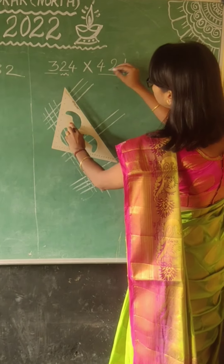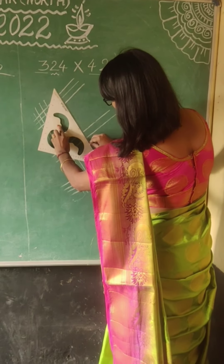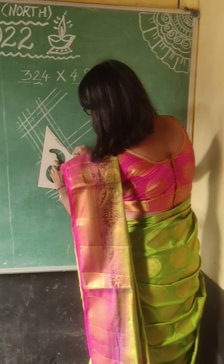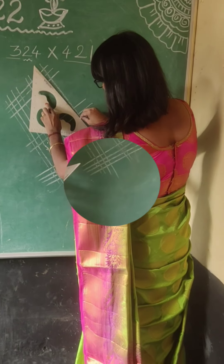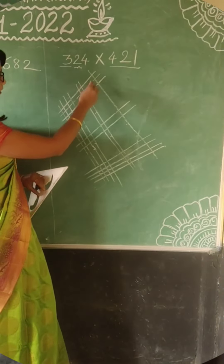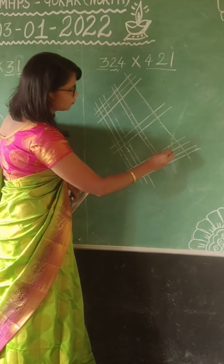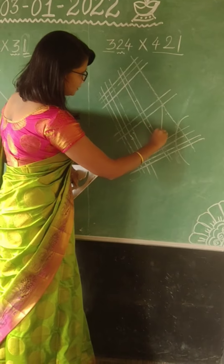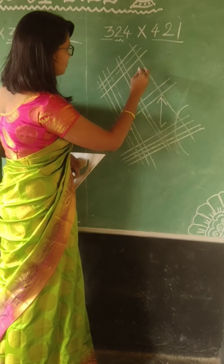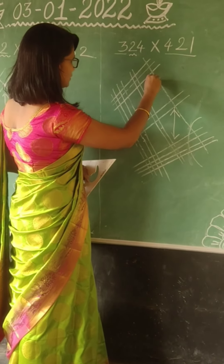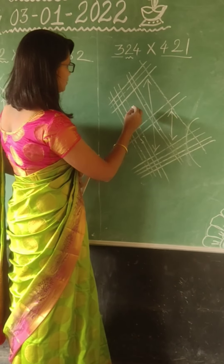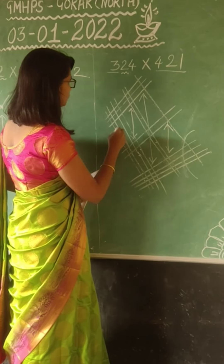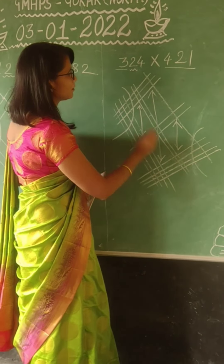The next number is 2. We will draw the lines in between. And the next number is 1 — we have already drawn the lines. Now, see where there are intersections. We have to count them. This intersection we have to add together, and this intersection we have to add together, and this intersection we have to add together.